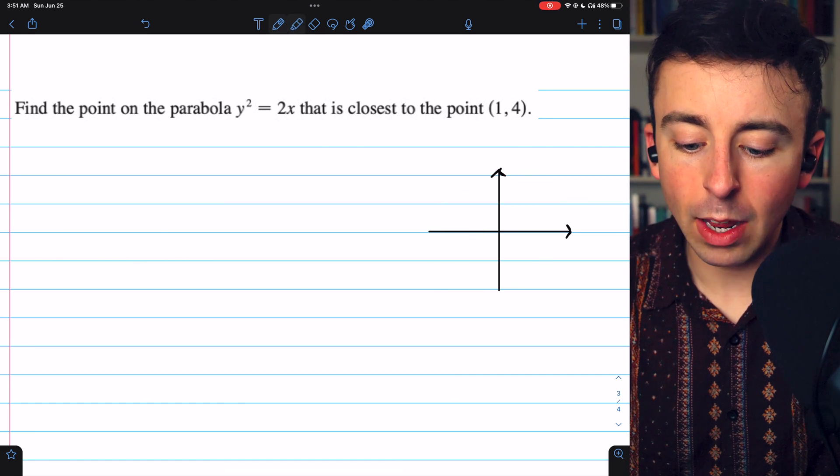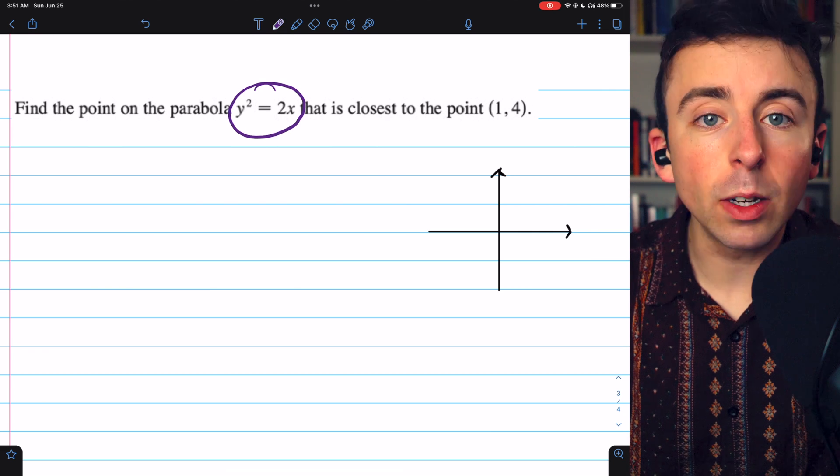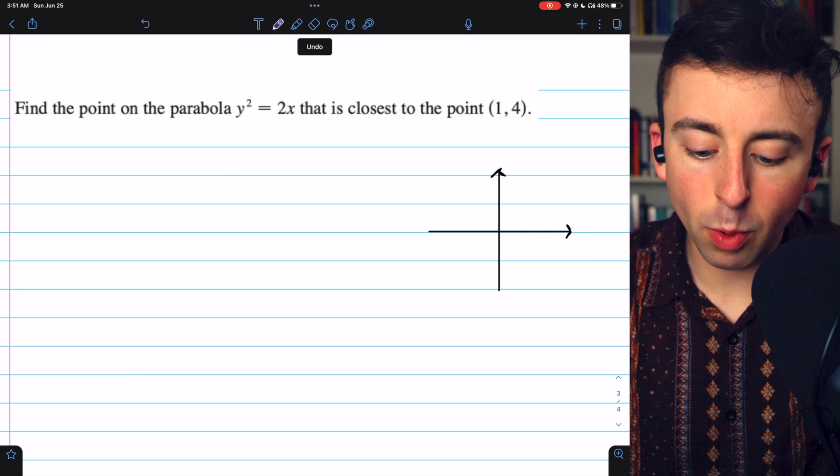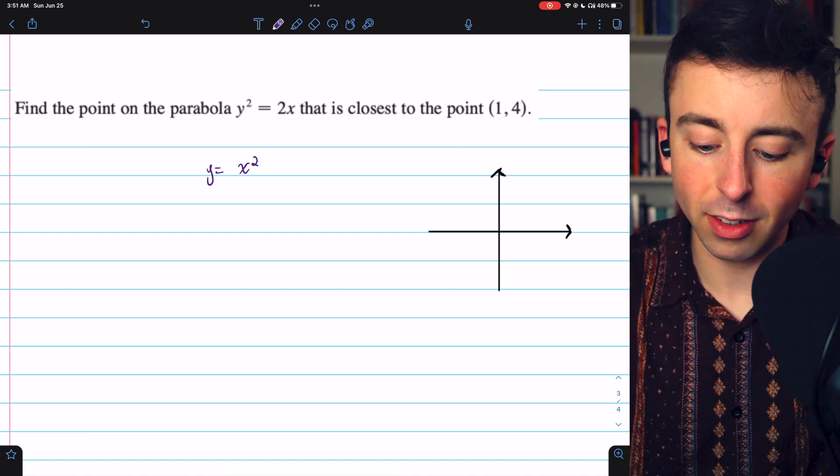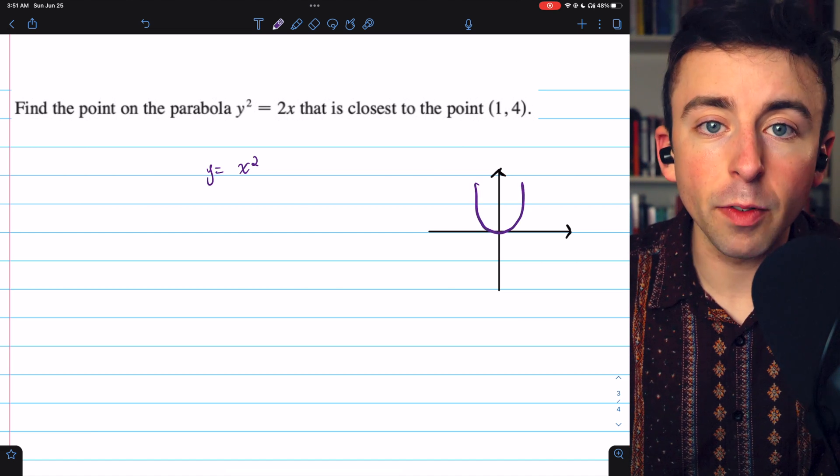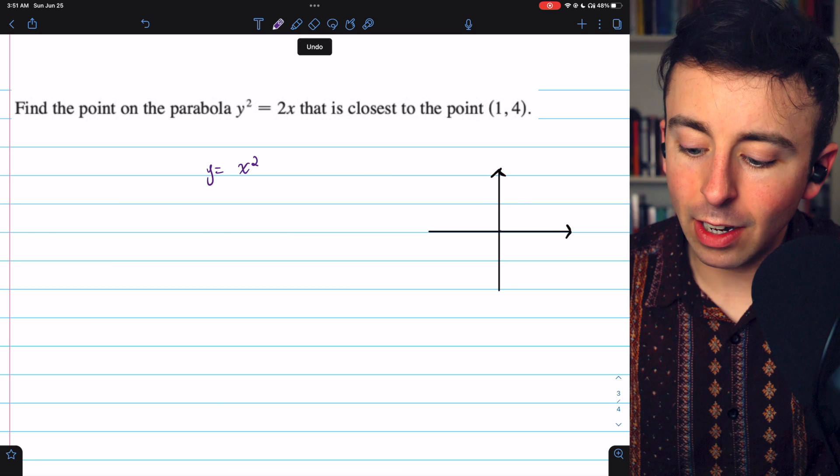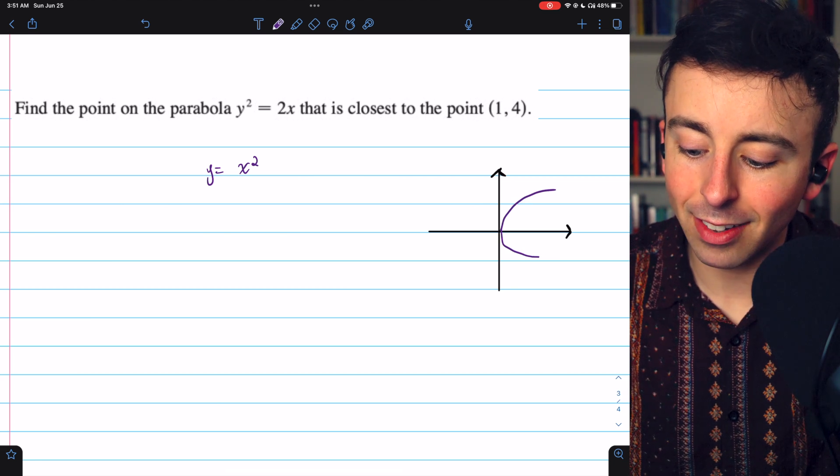Here's the xy plane and we want to graph y squared equals 2x. y squared equals 2x looks a lot like y equals x squared except instead of opening along the y-axis, it opens along the x-axis.